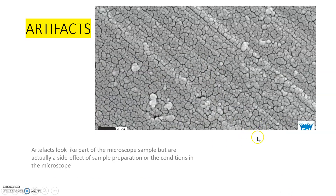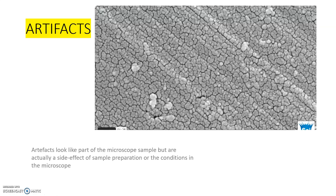These are examples of artifacts — they look like part of the microscope sample, but are actually a side effect of sample preparation or the conditions inside the microscope. The white-colored areas visible here are called artifacts. That concludes today's class. In the next session we will discuss the different methods used in sample preparation for SEM and TEM separately.